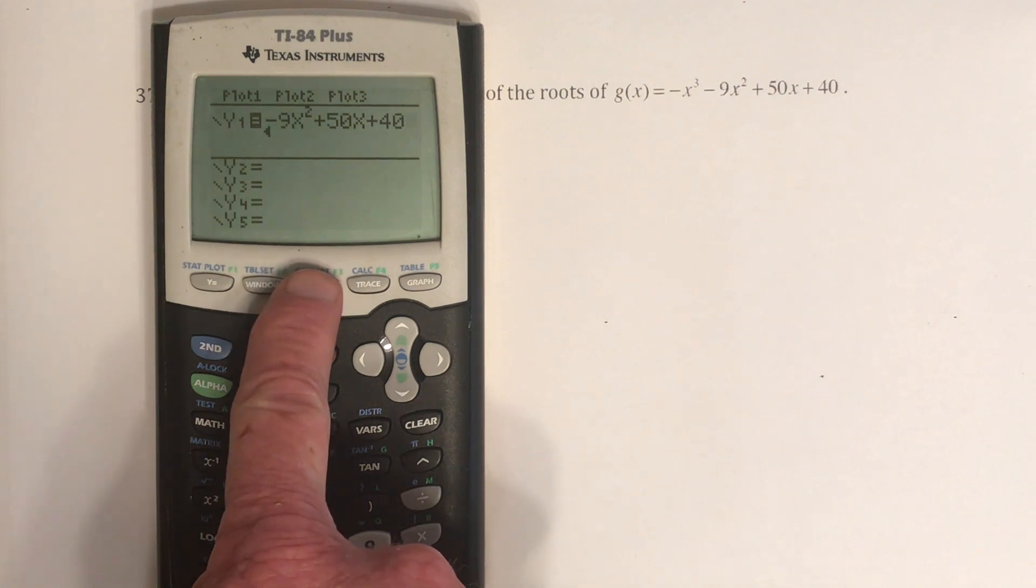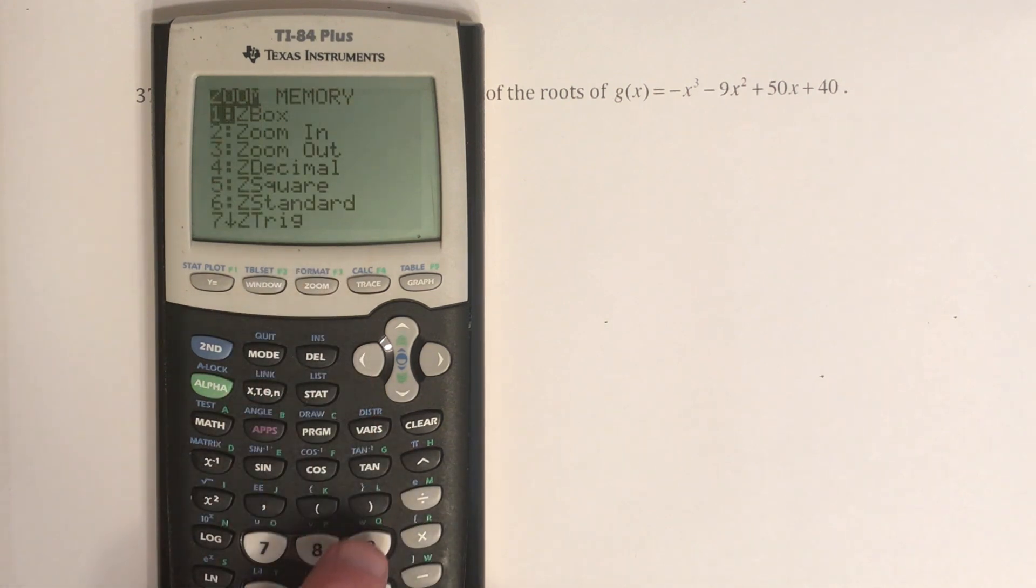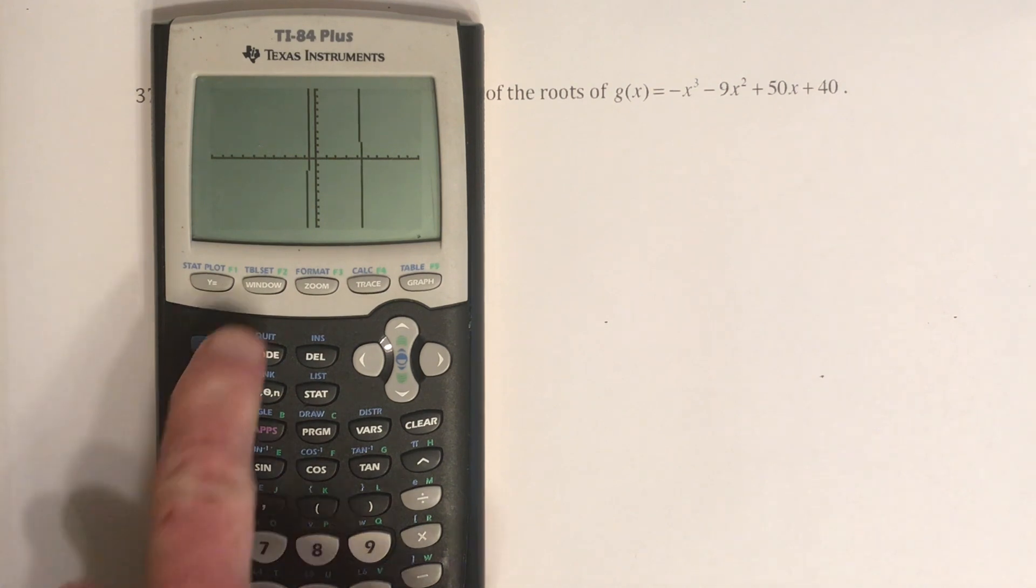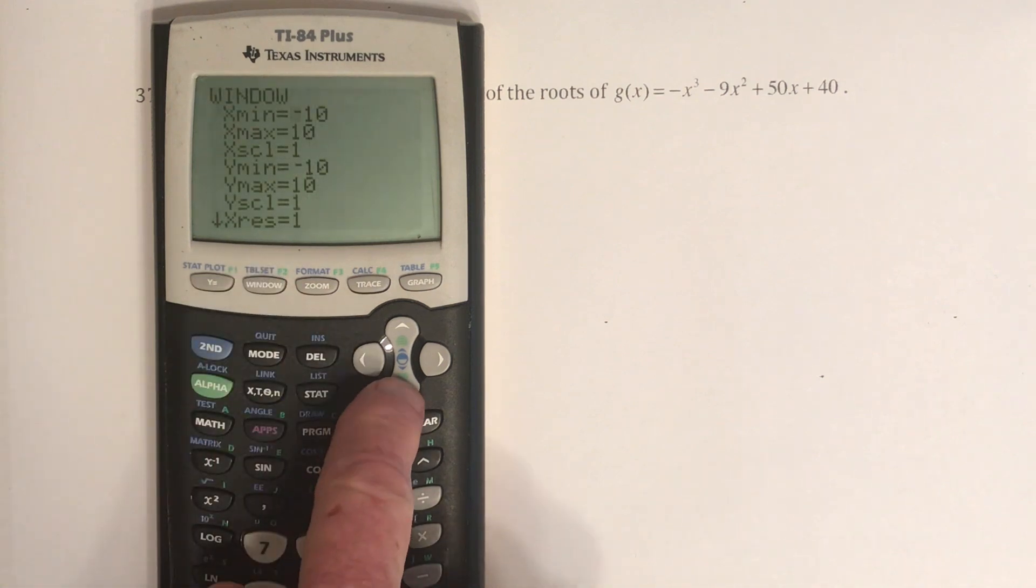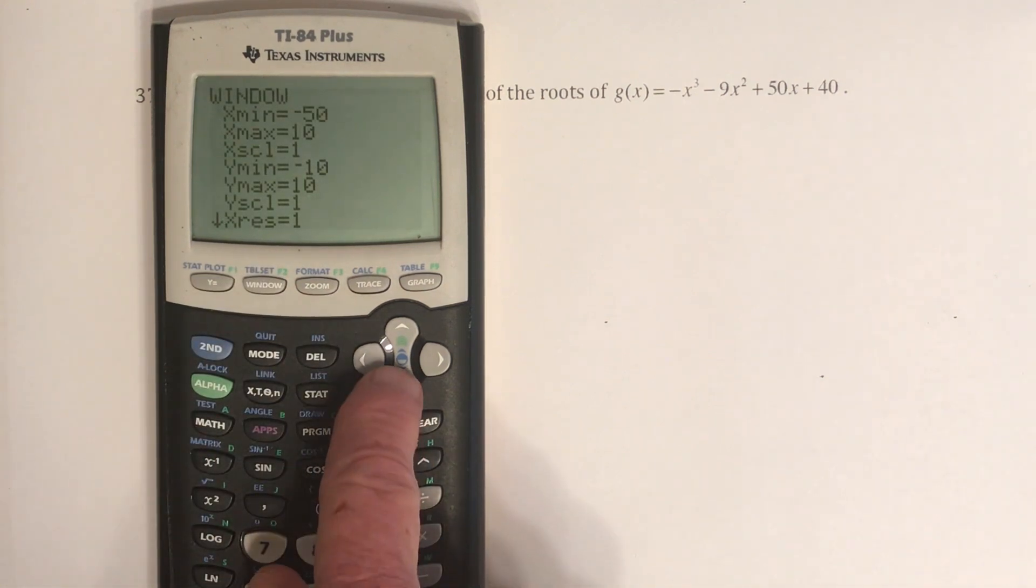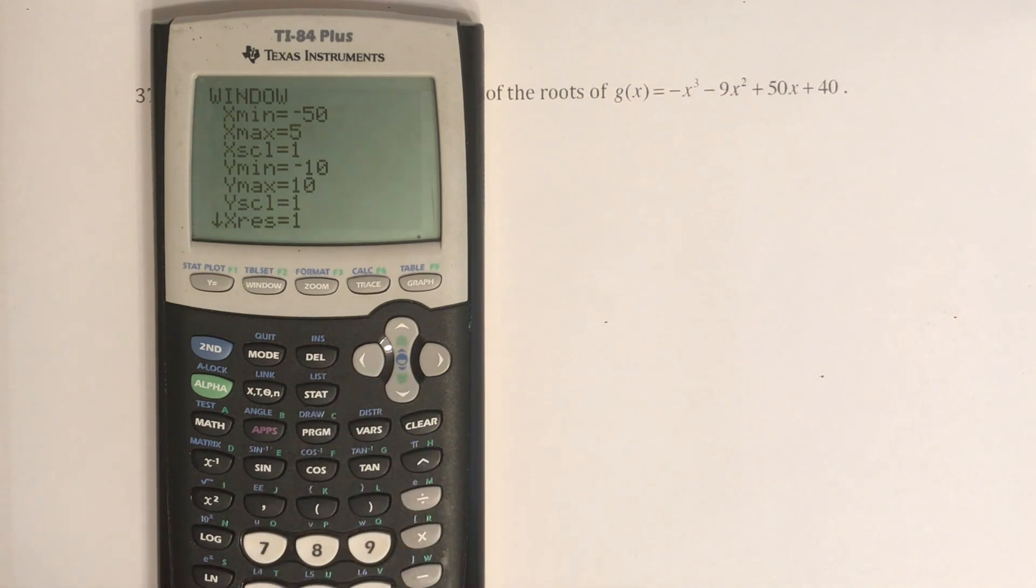So first, I'm going to go to zoom number 6 as standard and see if we can see three times when it hits the x-axis. So I only see two times. So what I'm going to do is widen the window, and I'm just going to guess maybe x is somewhere between negative 50 and positive 50.